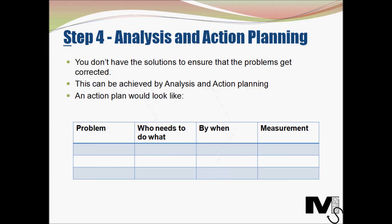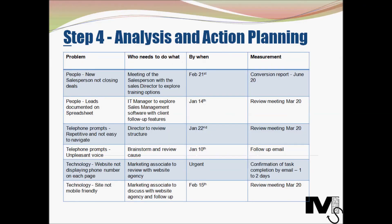But what do we actually do with the diagram? We go on to step four: analysis and action planning. At this stage you have a visual representation of all the causes, but you don't yet have solutions — and this is achieved by action planning. You can create an action plan with columns for the problem, who needs to do what, by when, and measurement — that's sufficient.